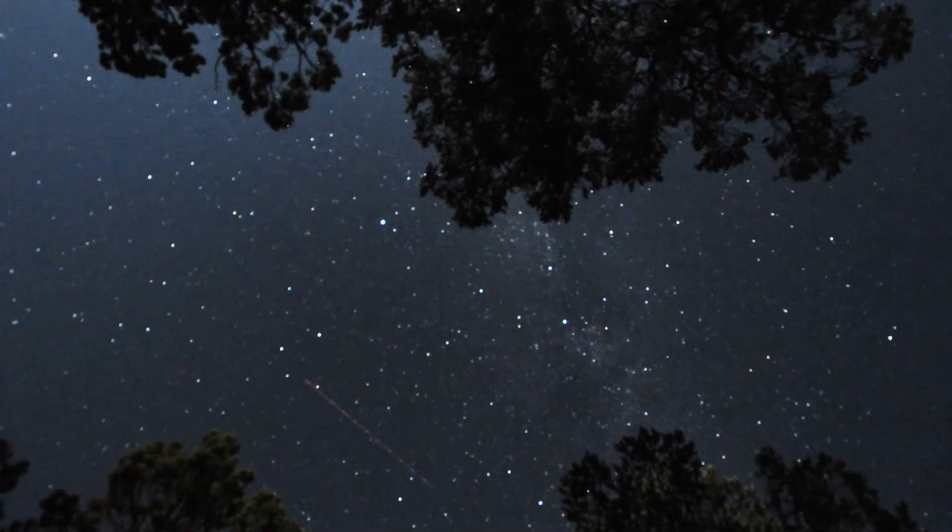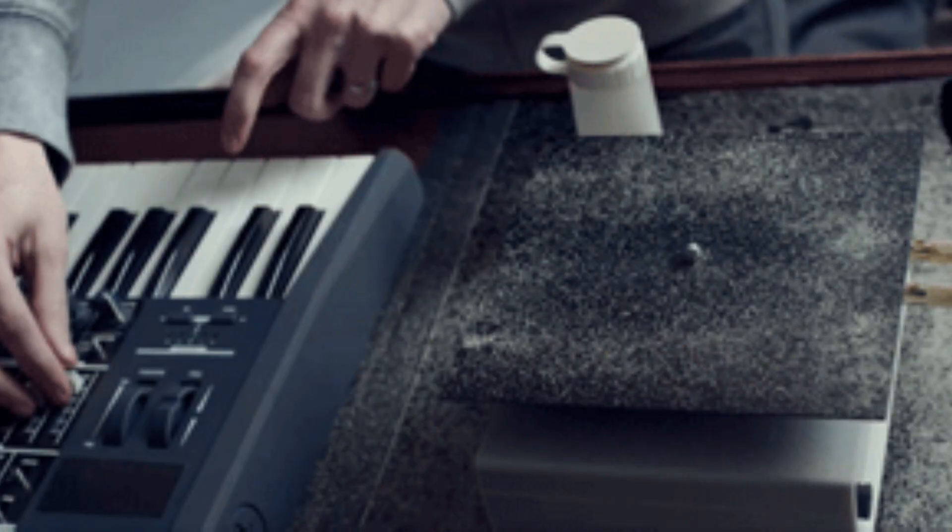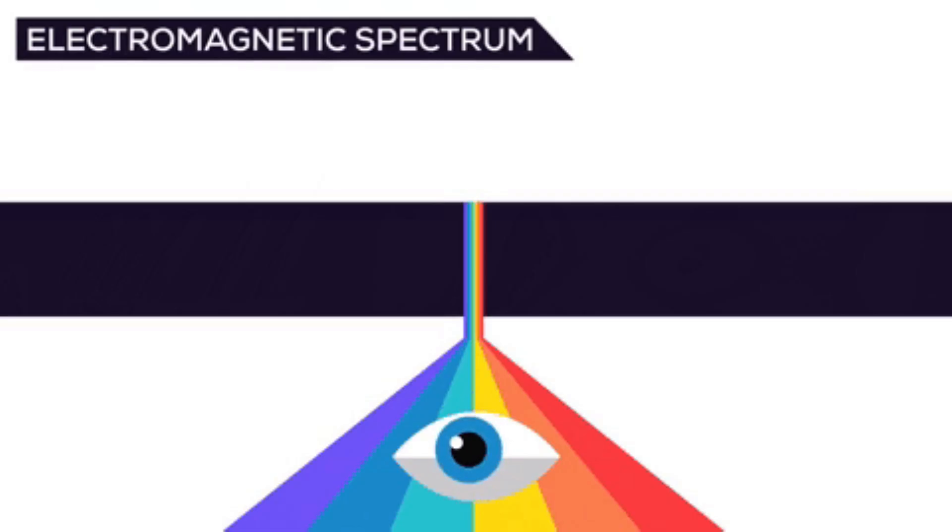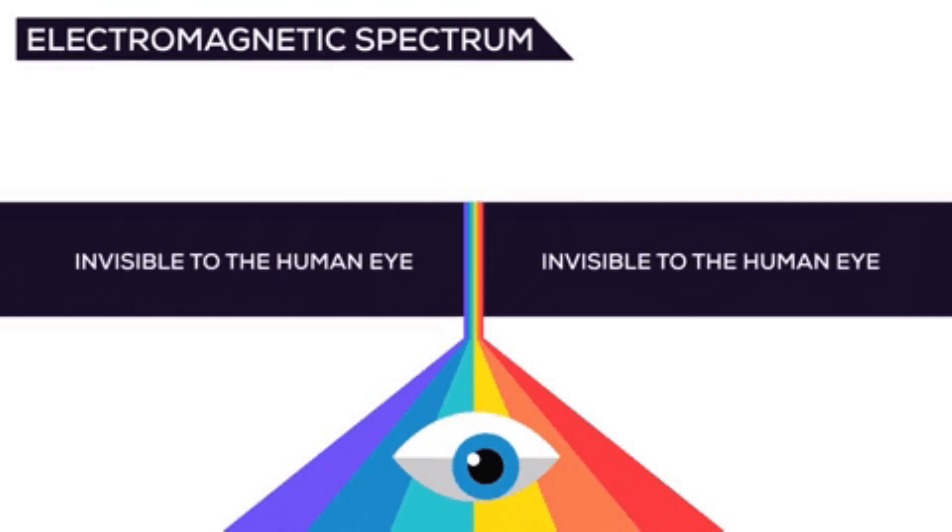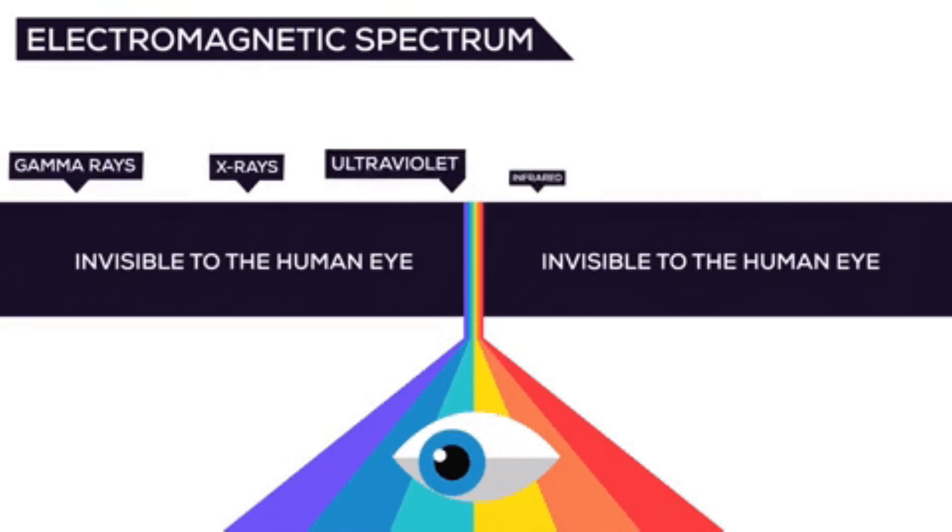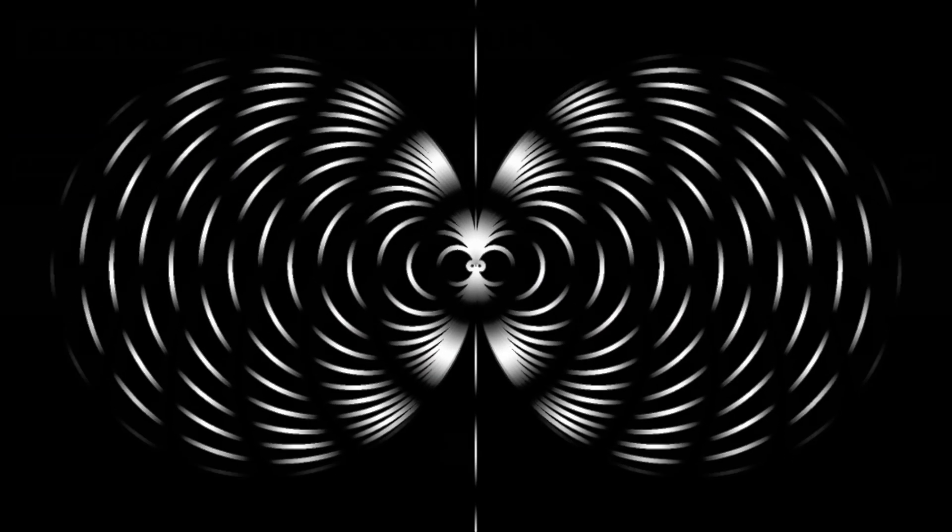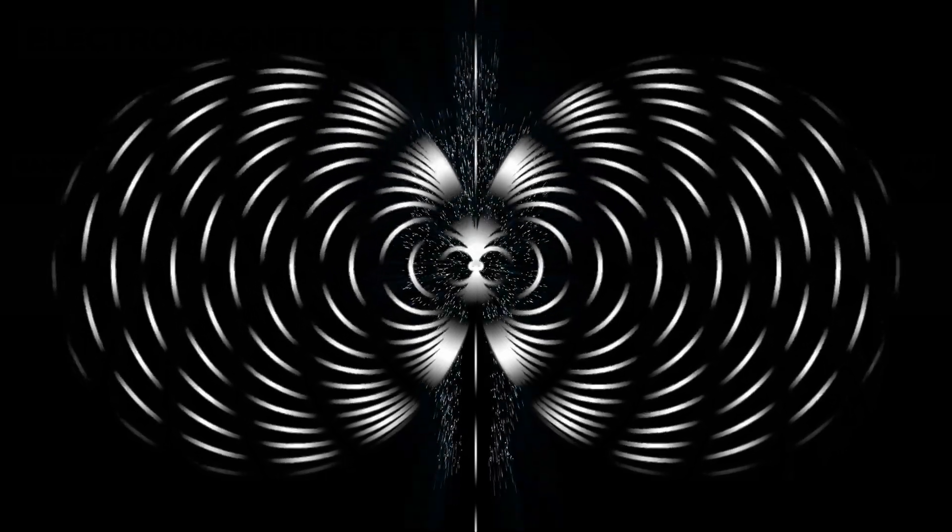Everything, from the cosmic hum of the universe to the subtle vibrations of sub-atomic particles, communicates through the language of frequency. The electromagnetic spectrum is the range of all frequencies of electromagnetic radiation, which includes everything from the lowest frequencies used for radio communication, to the highest frequencies used for gamma rays. Electromagnetic radiation consists of oscillating electric and magnetic fields that propagate through space at the speed of light.